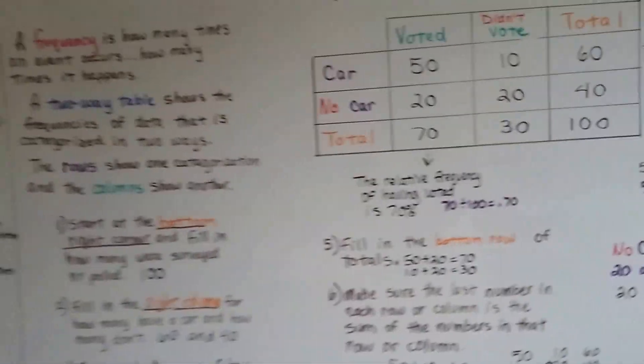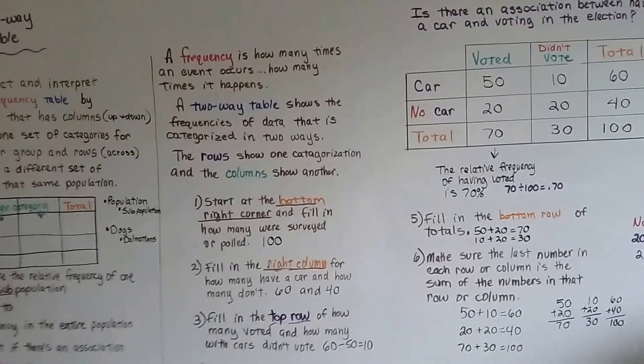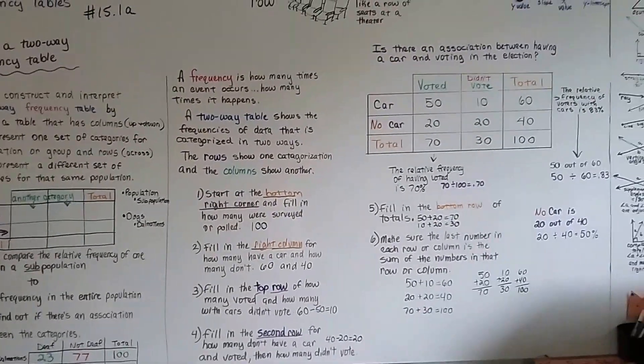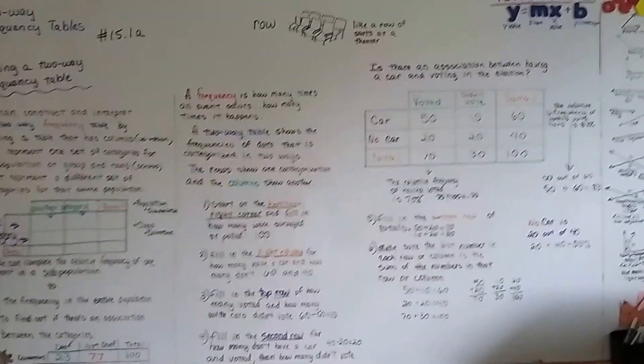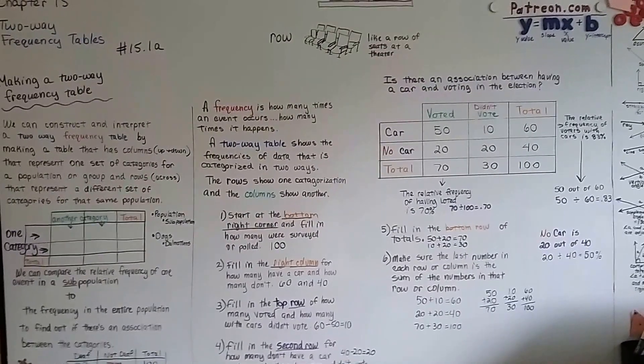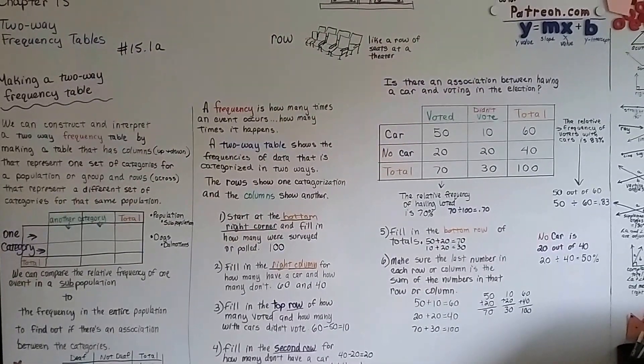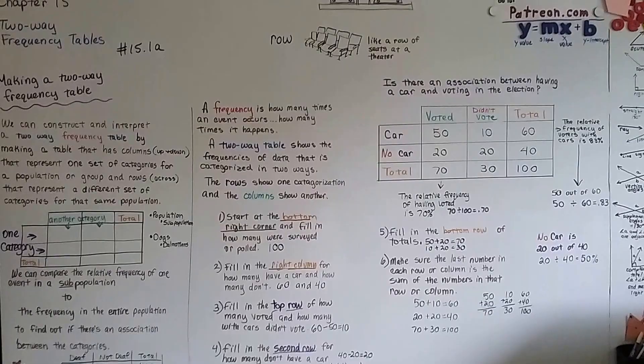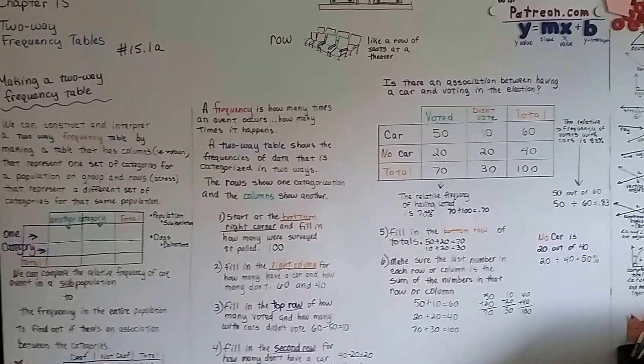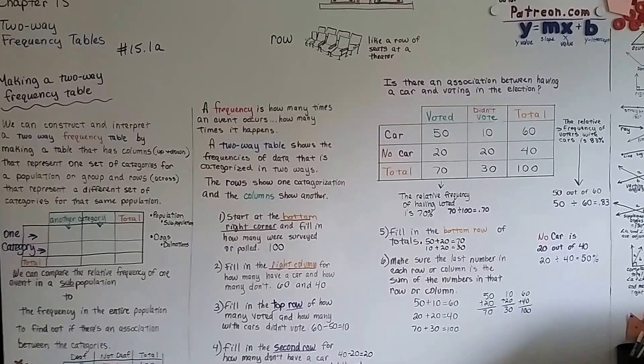So that's making a two-way frequency table. That's what it is. That's how we fill it out. In the next video, we're going to talk about relative frequency and if there's an association between our values. I'll see you next video. Keep trying.